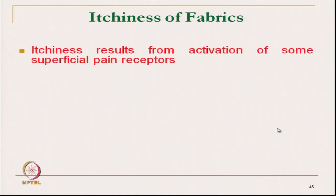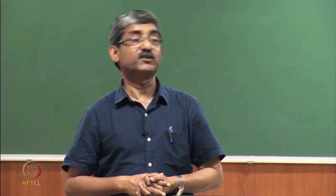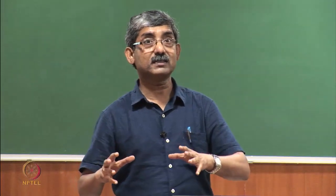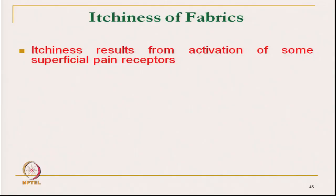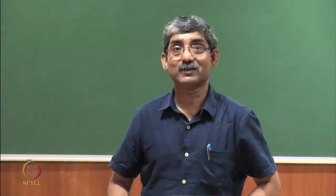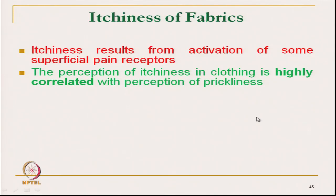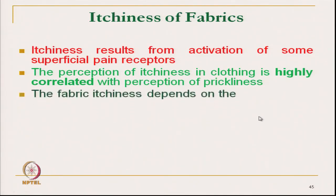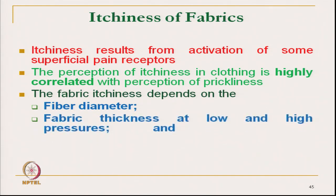Coming to another important tactile response — itchiness of the fabric. Itchiness is directly related to activity of superficial pain receptors and is directly related with fabric prickliness. These are highly correlated with prickliness sensation. Fabric itchiness depends on fibre diameter, fabric thickness at low and high pressure (i.e., compressibility), and fabric surface roughness — rough surface will give higher itchiness.